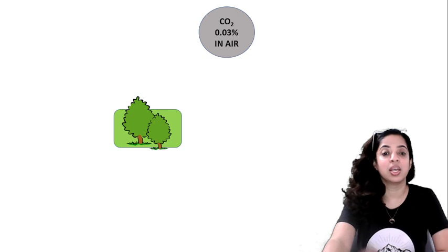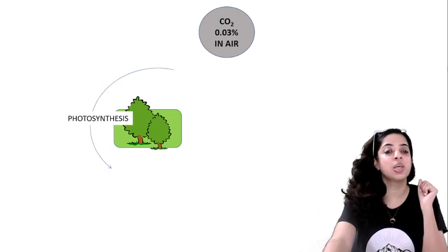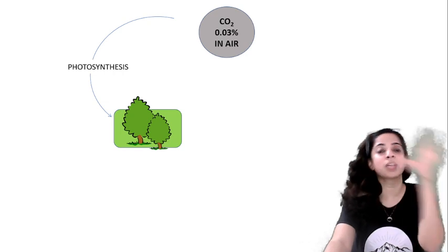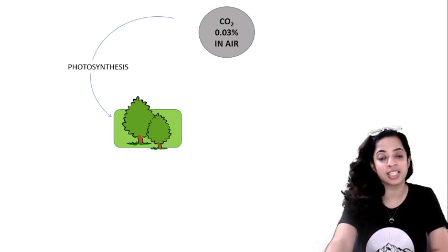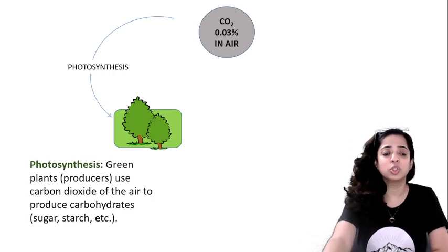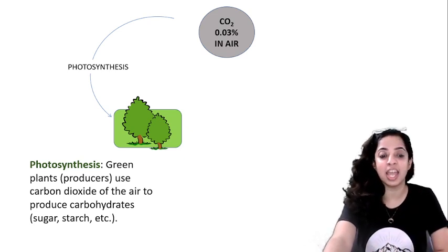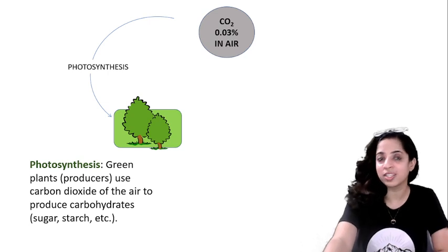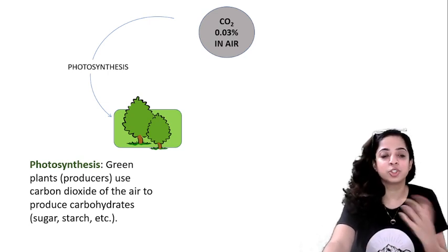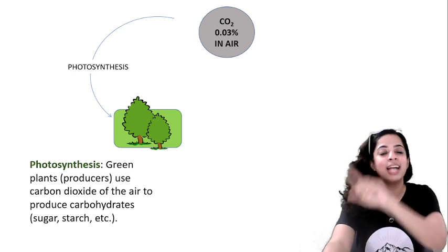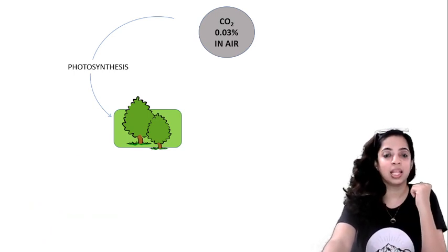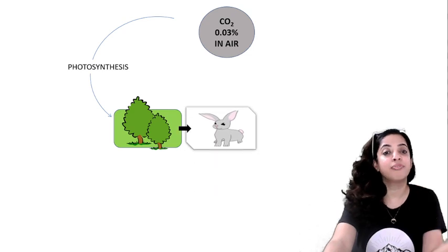The first step is photosynthesis. Green plants, which are the producers, use carbon dioxide from the air in the process of photosynthesis to produce carbohydrates — glucose, sugars, starch, and so on. That is how carbon enters the plant.